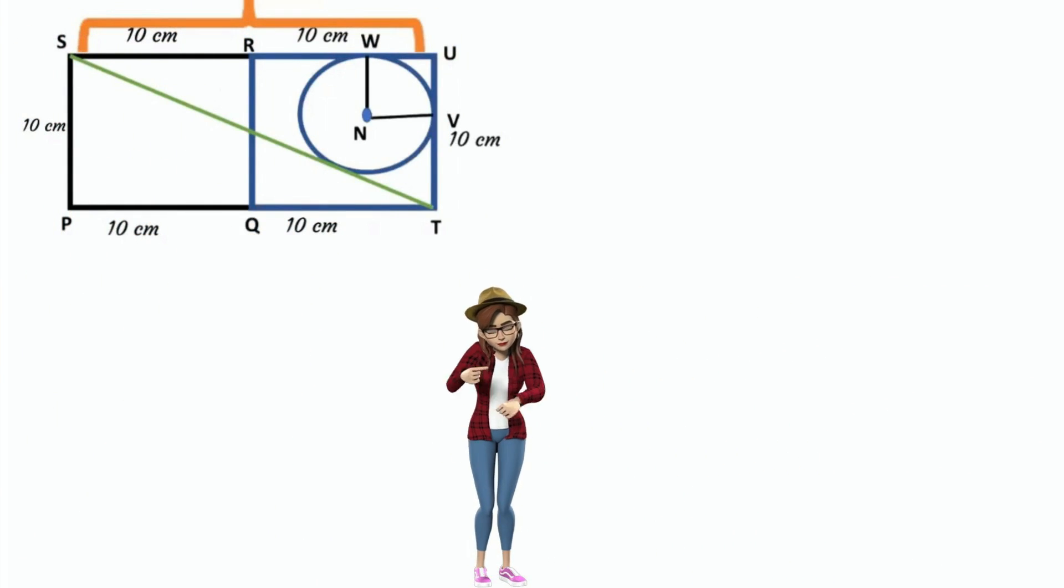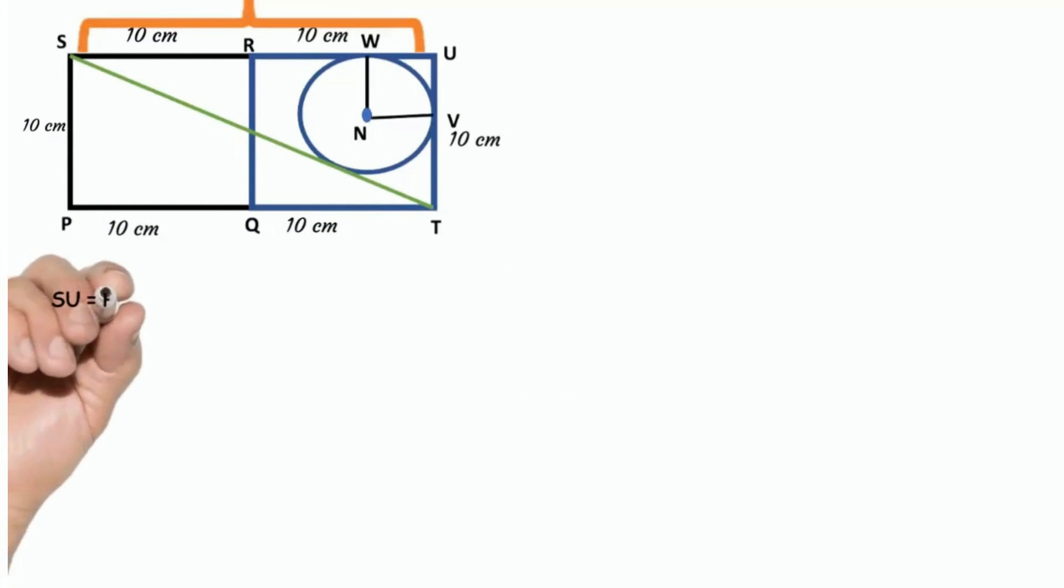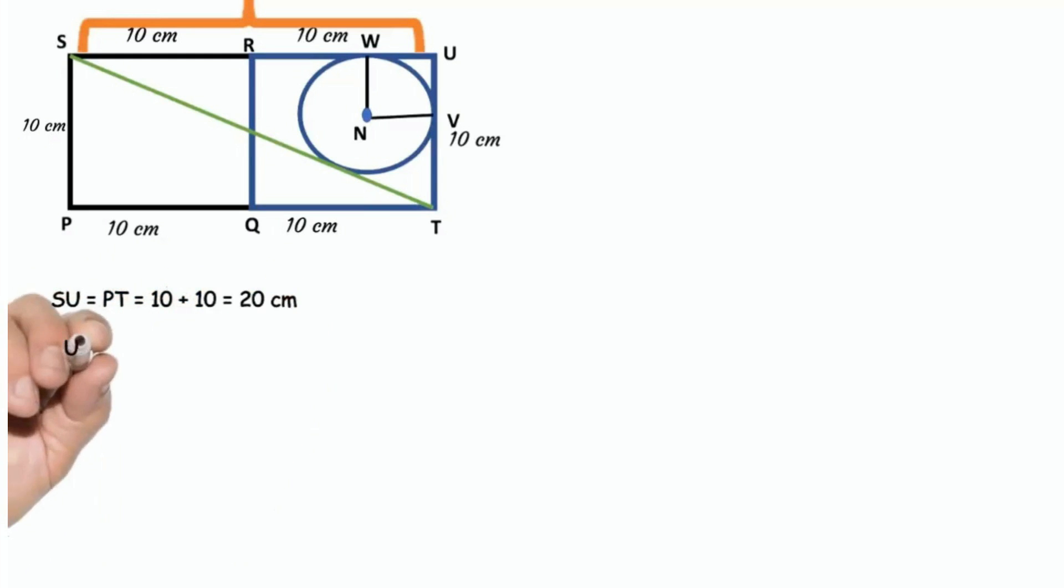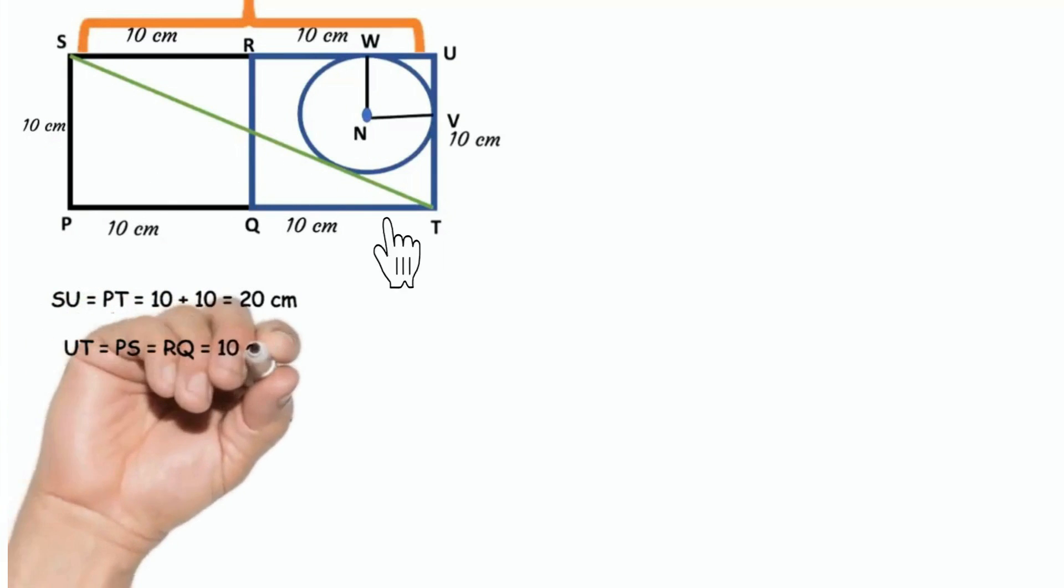Let's write what is given in the problem. Side of the square is 10 cm. SU equals PT equals 10 plus 10 equals 20 cm. We can see two squares joined forms rectangle. Each angle of rectangle is 90 degrees.